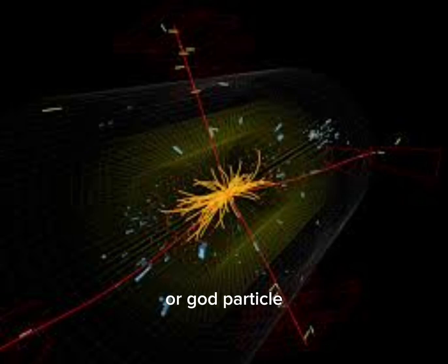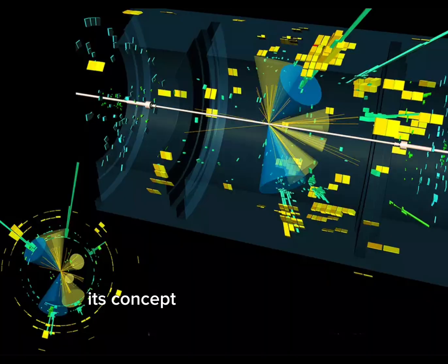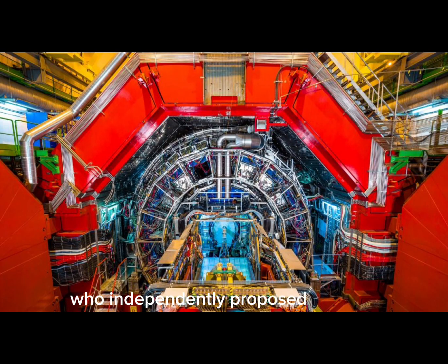The Higgs boson, or God particle, is one of the most important parts of the standard model. Its concept was first proposed in 1960 by several physicists, including Peter Higgs, who independently explained how some particles acquire mass.